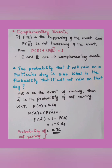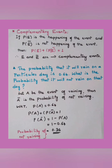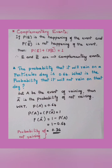There are two types of events: complementary events and mutually exclusive events. For complementary events, P(E) is the probability of the event happening and P(Ē) is the probability of it not happening — these two are contradictory statements. This is represented by the formula: P(E) + P(Ē) = 1. E and Ē are called complementary events.